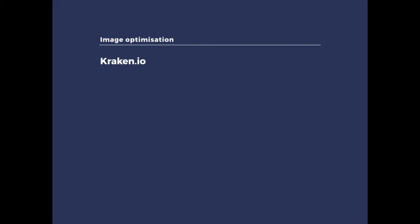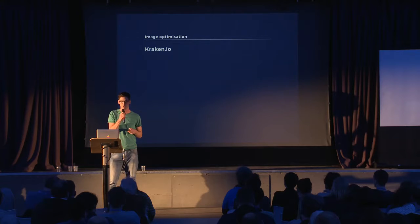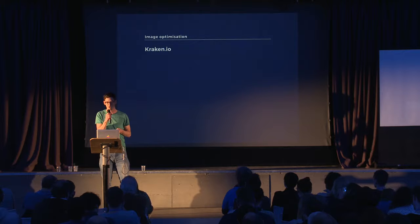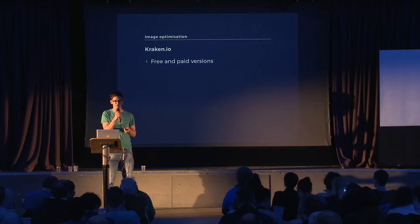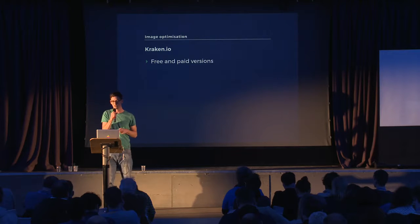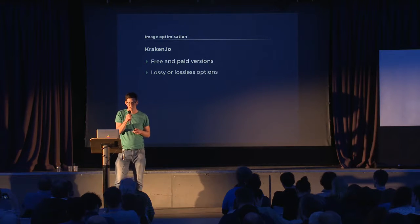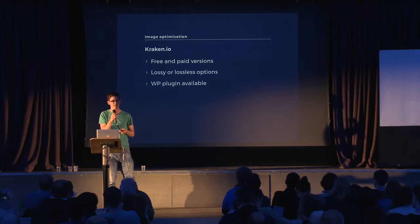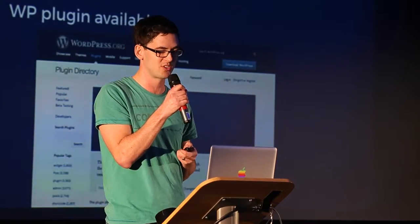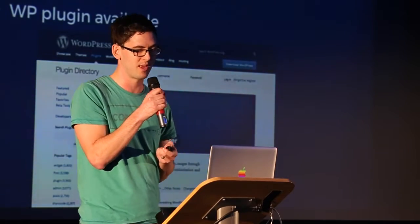There are some online tools available to help you with this. A personal favorite of mine is called Kraken at kraken.io. There are free and paid versions, and there's a web interface you can use or an API. It has lossy and lossless options. There's also a WordPress plugin available called Kraken Image Optimizer, though the WordPress plugin does require a paid plan — I think they give you about five megabytes for free, which obviously isn't much.